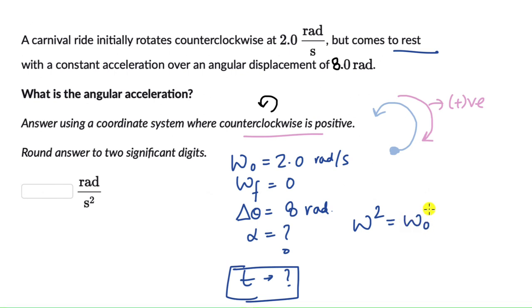That is omega final squared equals omega initial angular velocity squared plus two alpha into delta theta. Now we know this is zero. This right here is zero. This is 2 squared. We need to figure out alpha and delta theta, we know it's 8.